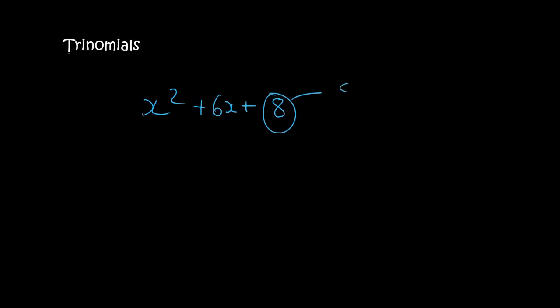Here's another one. So, we look at 8. 8 is the same as 8 times 1, or 2 times 4. 2 and 4 can make 6. Easy. 2 plus 4. So, we open up our brackets. We say x and x. We say plus 2 plus 4. Done.